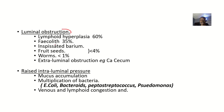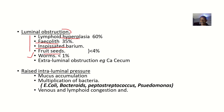In summary, there will be luminal obstruction. The possible causes include lymphoid tissue overgrowth obstructing the lumen, fecaliths from feces leaking out of the large intestine, inspissated barium, fruit seeds, worms, and extraluminal obstructions such as from a cecal tumor. These all result in raised intraluminal pressure due to the blockage.